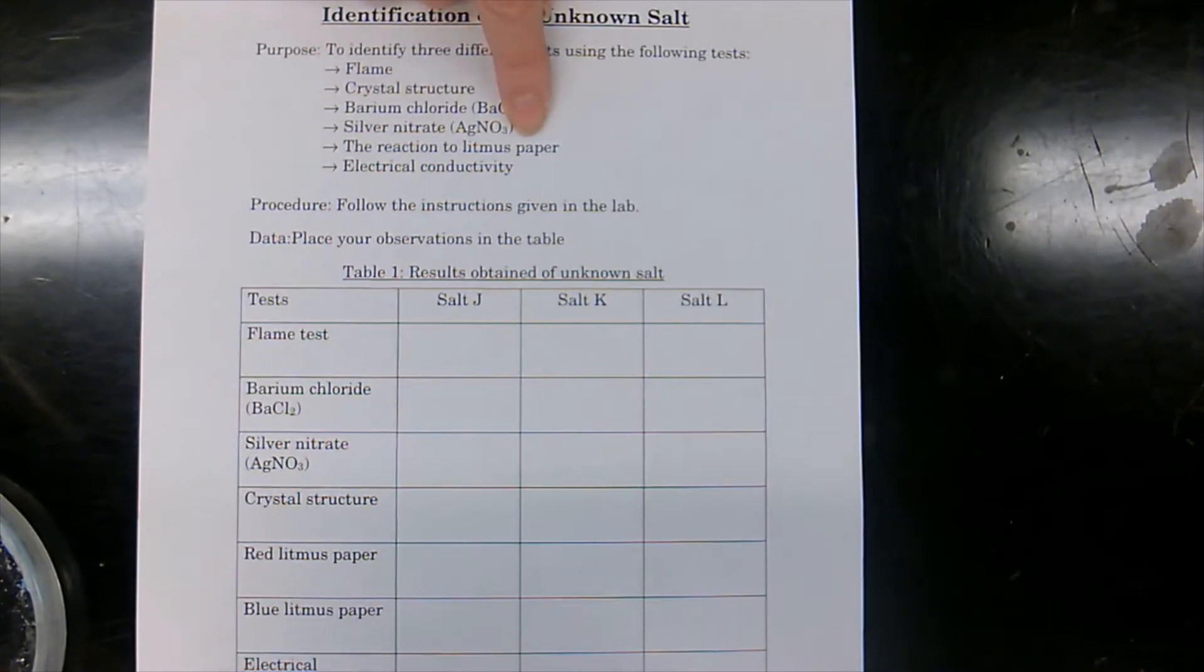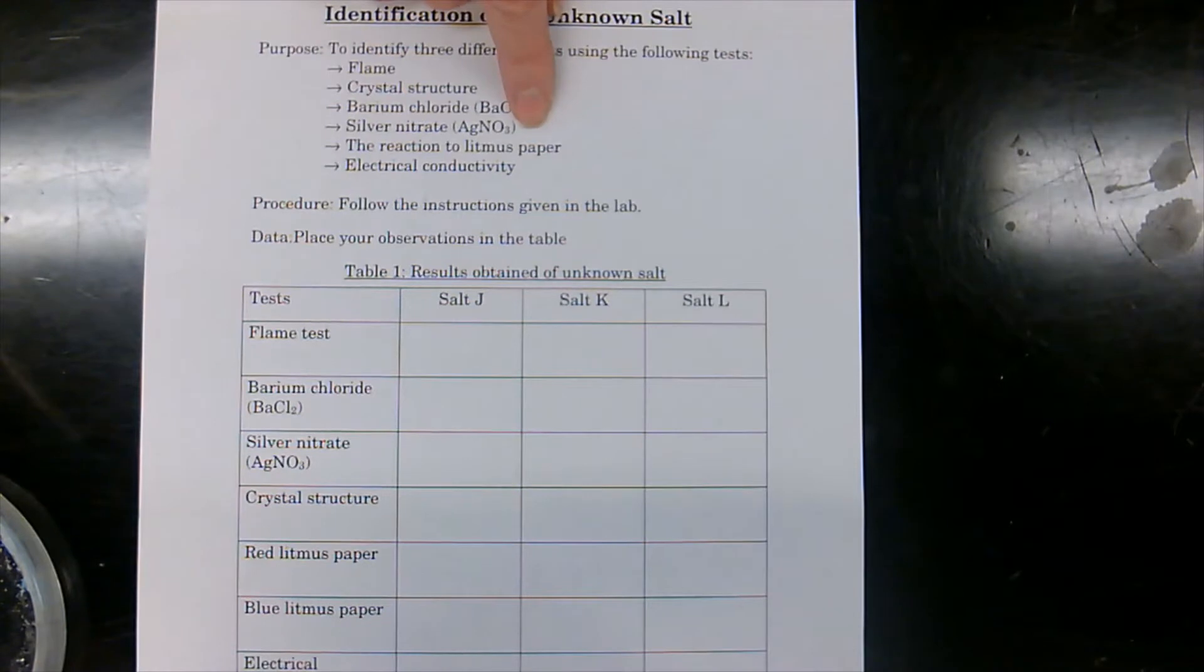We're going to be doing litmus paper testing. So this one we've seen before, red litmus, blue litmus. Red turns red, stays red or turns blue. Blue turns red or stays blue. Depending on which one it is, it's going to be either an acid, a base, or a neutral.